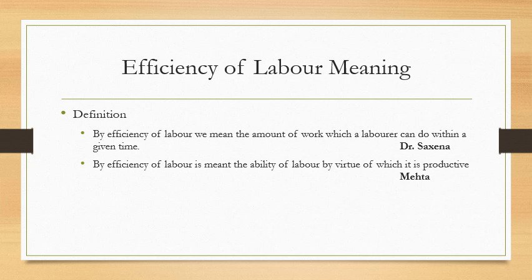Efficiency of labor. Generally, labor has two aspects: a quantitative aspect as well as a qualitative aspect. The quantitative aspect of labor is concerned with the size of labor, whereas the qualitative aspect of labor is concerned with the efficiency of labor. The efficiency of labor refers to the power of a worker to work and produce goods and services during a given period of time.